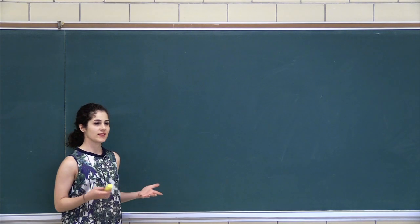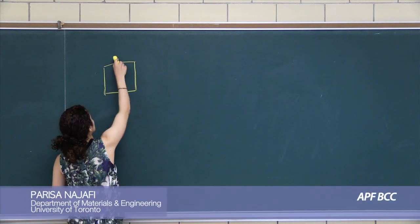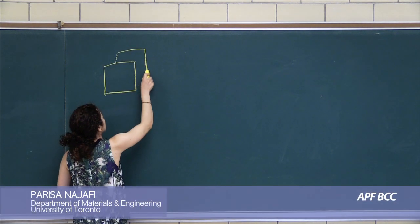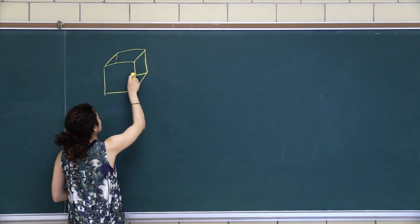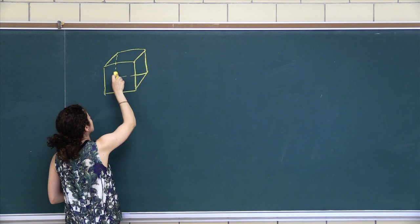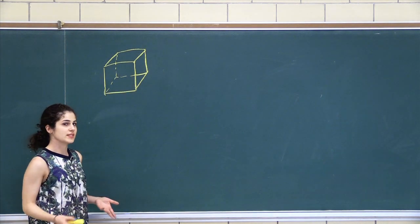So you want to start off by drawing the BCC structure. Two squares. And we know that an eighth of an atom fits in each corner.